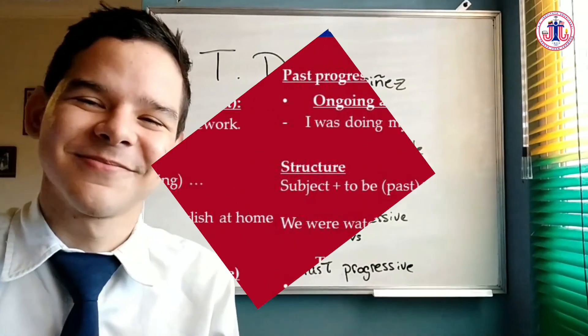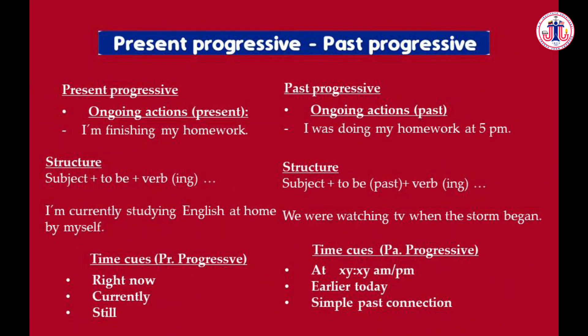The present progressive is used to talk about ongoing actions in the present — actions that we're doing right now, currently in the moment. For example: 'I'm finishing my homework.'